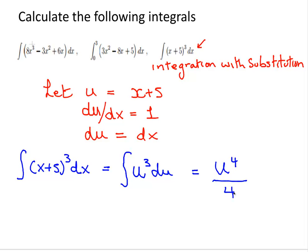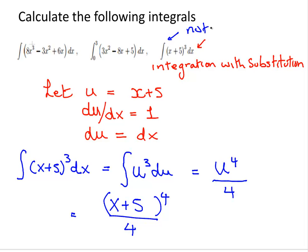That's just using the power rule we've seen previously. Now we substitute x plus 5 back in, so the integral is (x plus 5) to the power of 4 all over 4. This is not a definite integral, so we put back in the constant of integration, plus c. And that ends the presentation.